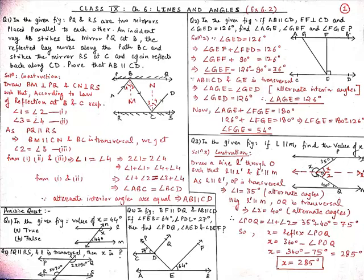Therefore, by alternate interior angles they are equal, and hence we can say that AB is parallel to CD. As I mentioned in the last video, if any one pair of alternate interior angles are equal, then the lines are parallel. Based on this concept, AB is parallel to CD.